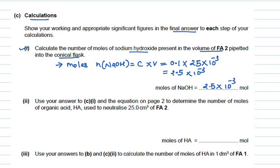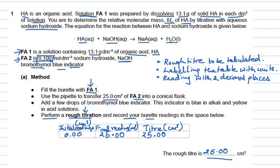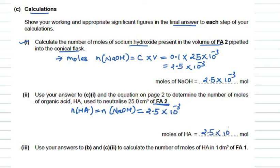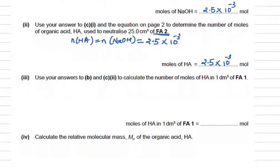Next, use your answer to C1 and the equation to determine the moles of organic acid HA used to neutralize 25 cm³ of FA2. The equation shows a 1:1 stoichiometry between HA and NaOH. Therefore, moles of HA = moles of NaOH = 2.5 × 10⁻³ moles. This comes directly from the 1:1 ratio in the balanced equation.